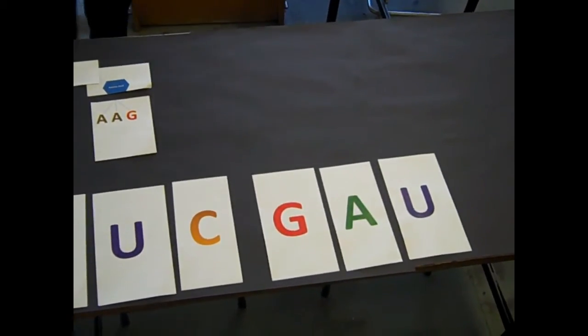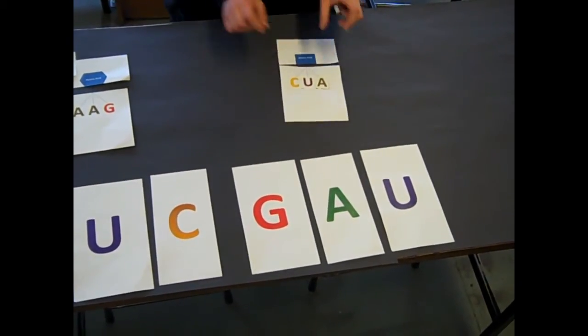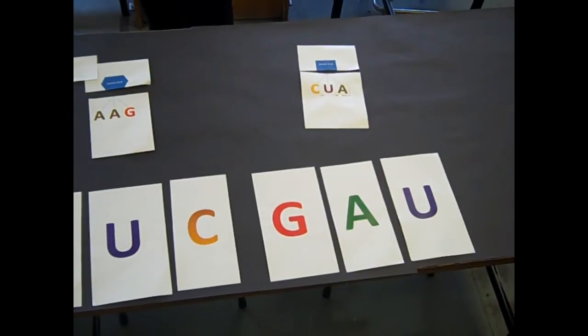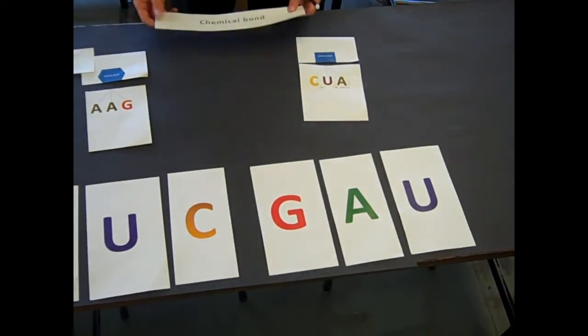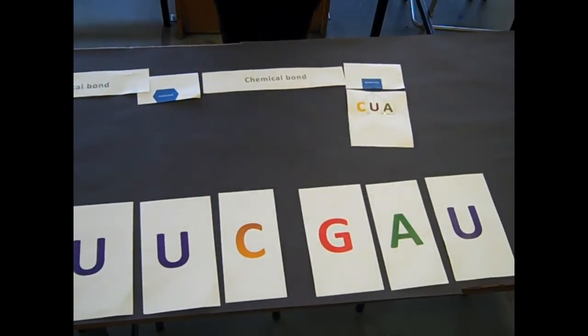Then, another matching tRNA will come along and it will bring along its own specific amino acid and another chemical bond will bond the amino acids together and the tRNA will leave.